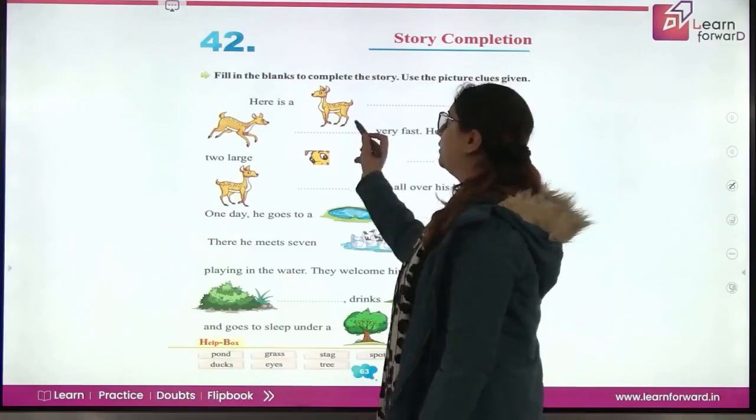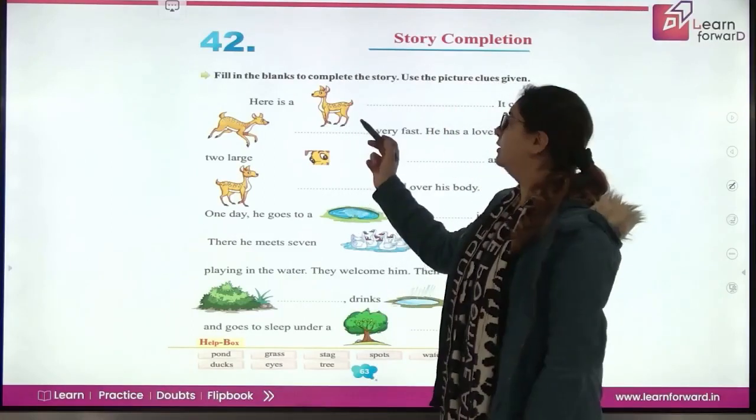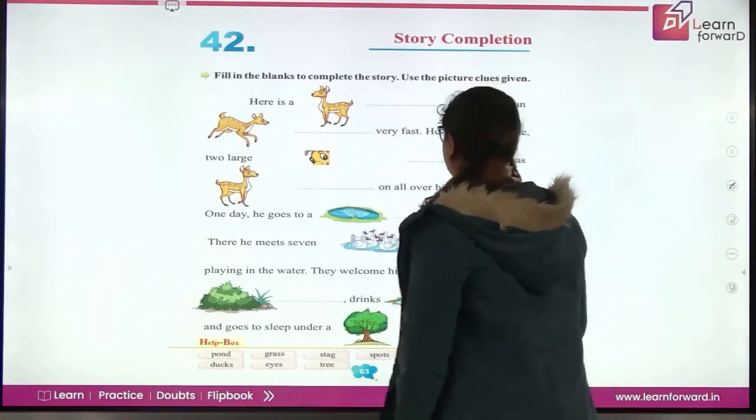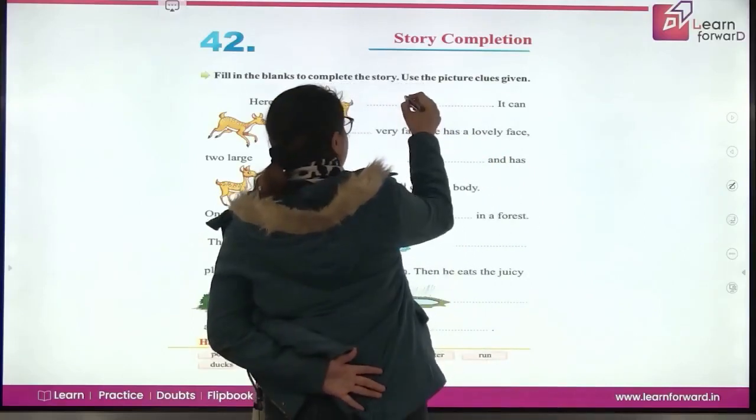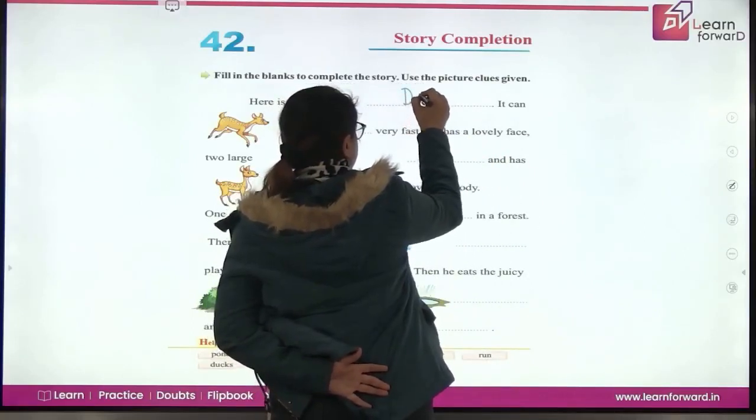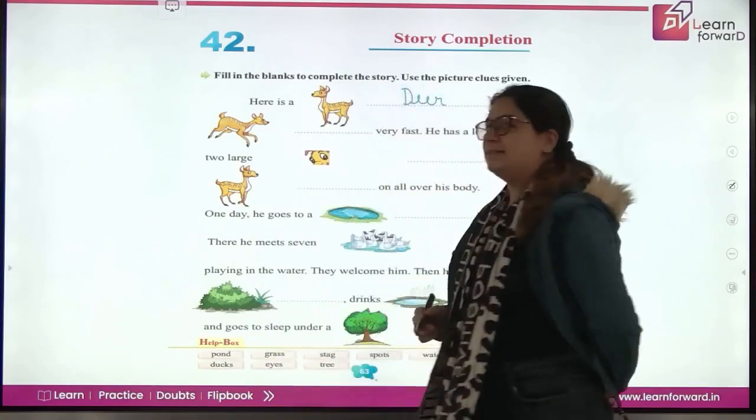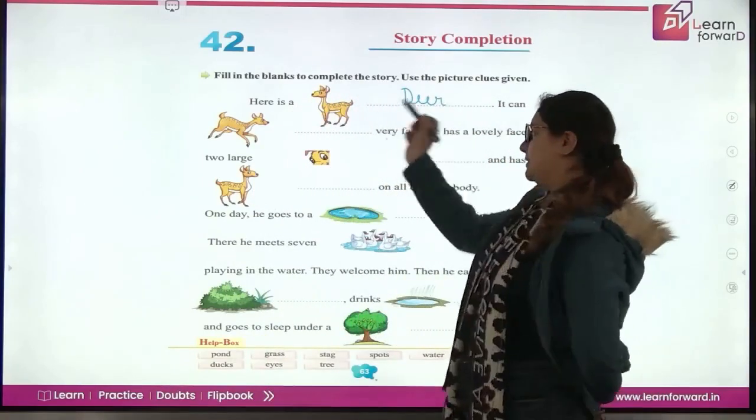Here is a - what do you see here, children? Deer. Very good. Take out your pencil. Here we write D-E-E-R. Deer, because there is a deer here.